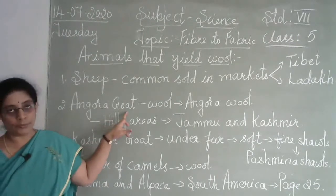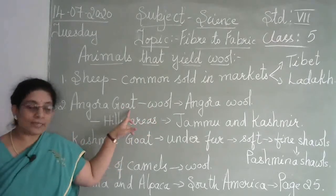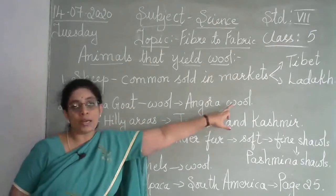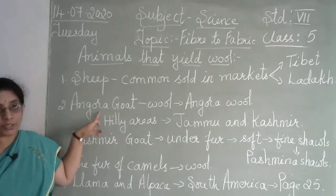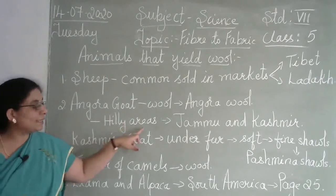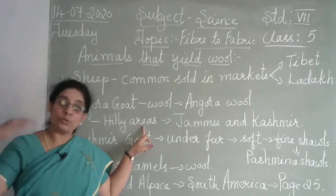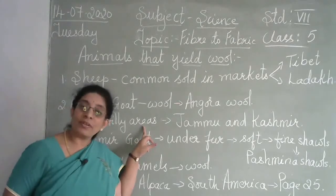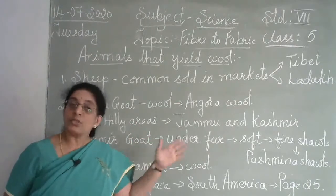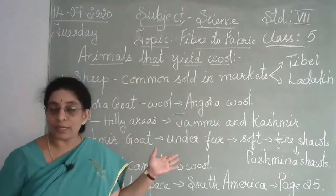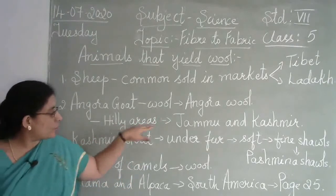Next we have a type of goat called the Angora goat. This Angora goat also produces wool, and that wool is called Angora wool. These Angora goats are found in hilly areas towards the northern side of India — like Jammu and Kashmir, Himachal Pradesh, Haryana, and Uttaranchal.